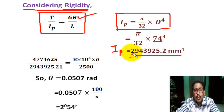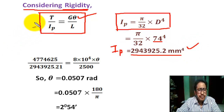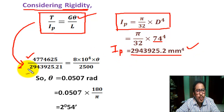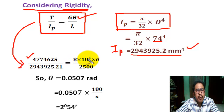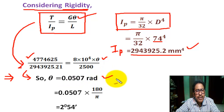By calculation, IP equals 2,943,925.2 millimeter to the power 4. Now putting all values into the formula: T_max divided by IP equals G times theta divided by L — with G equal to 8 into 10 to the power 4 and L equal to 2500 — by calculation, theta equals 0.0507 radian.